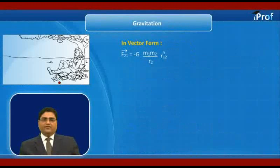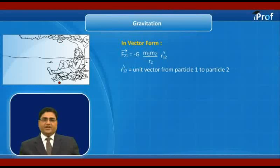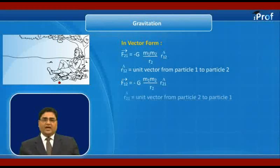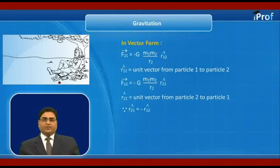In vector form, F₂₁ = -G(M1M2/R²)r̂₁₂, where r̂₁₂ is a unit vector from particle 1 to particle 2. Since r̂₂₁ is a unit vector from particle 2 to particle 1, and r̂₂₁ = -r̂₁₂, therefore F₂₁ = -F₁₂.